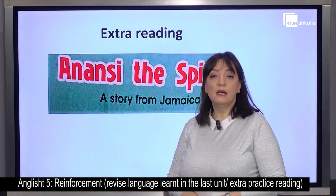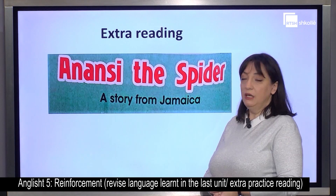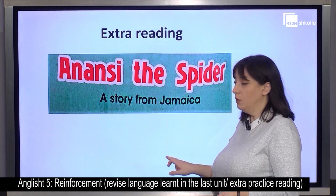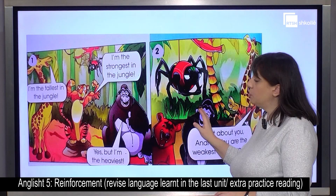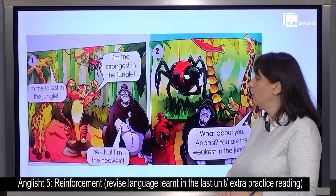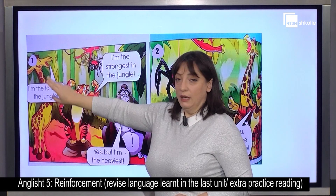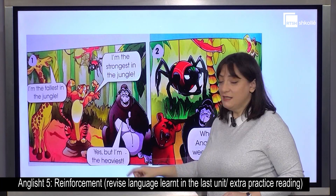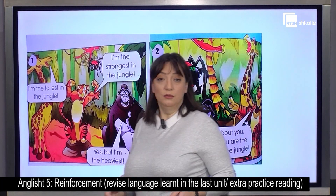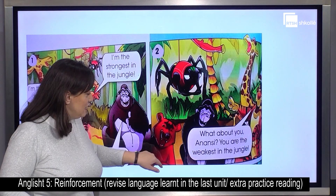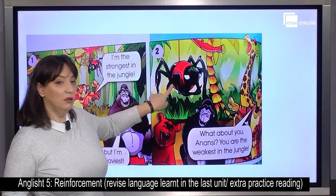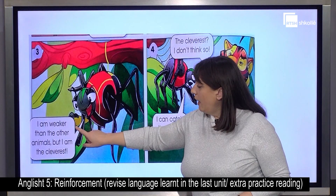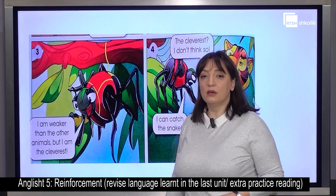It's time for some extra reading now. Have a look. The title of the reading is 'Anansi the Spider' — a story from Jamaica. We have some texts to read. I read, you follow me. Number one: 'I'm the tallest in the jungle. I'm the strongest in the jungle. Yes, but I'm the heaviest.' Number two: 'What about you, Anansi? You are the weakest in the jungle.' This is Anansi. 'I am weaker than the other animals, but I am the cleverest.'